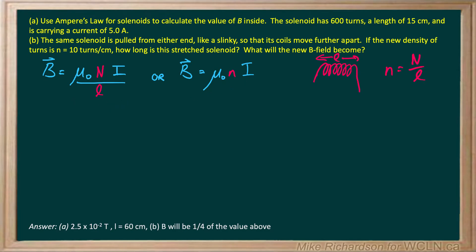In part A, we need to find the magnetic field inside a solenoid with 600 turns. The length is 15 centimeters, but in physics we want meters, so that's 0.15 meters. The current is 5 amps, and we wish to find B.